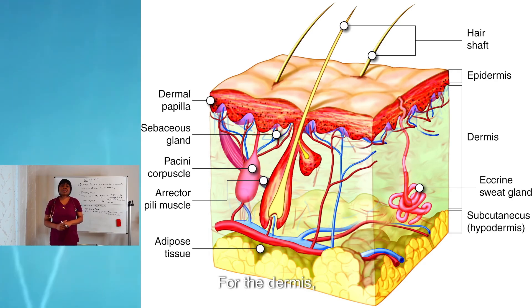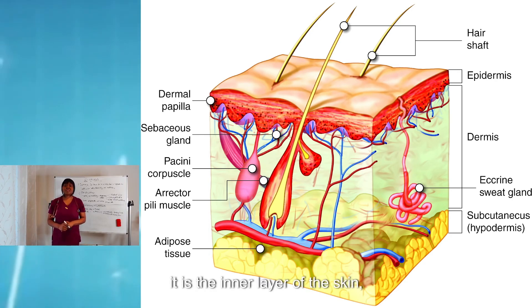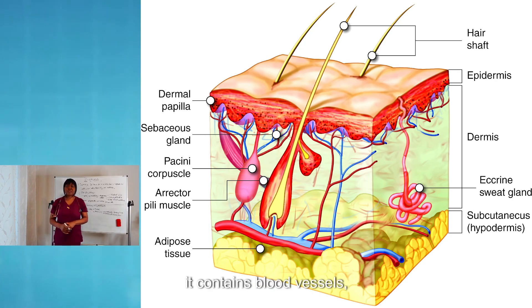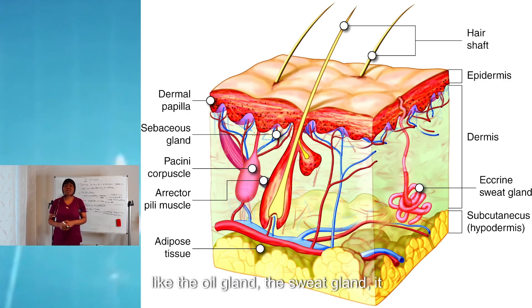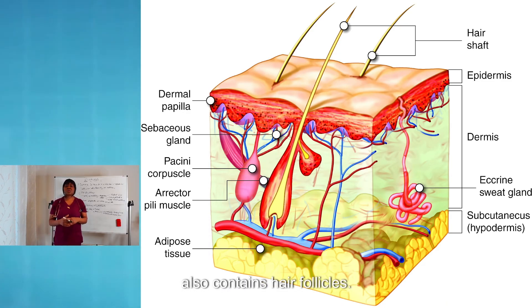For the dermis, it is the inner layer of the skin. It contains blood vessels. It contains some glands like the oil glands and sweat glands. It also contains hair follicles.